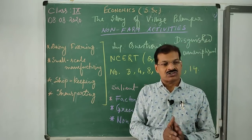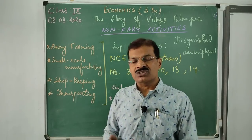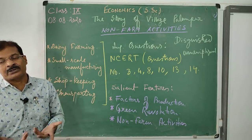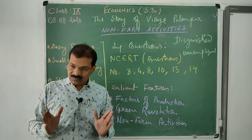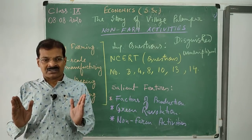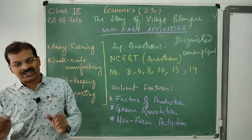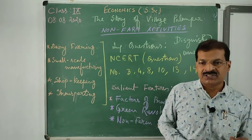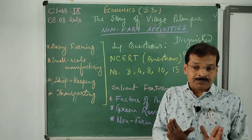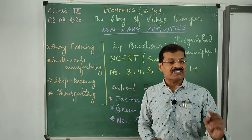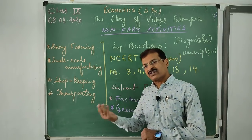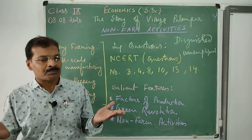Labor is the power of the laborer used in the production process. It is of two types: physical or manual labor, where more physical effort is used like a rickshaw puller or construction worker; and mental labor, where intellectual power is used like a doctor, astronaut, or teacher. Physical capital has two parts: fixed capital and working capital. Fixed capital is used for a long period of time, like buildings, machinery, and equipment.